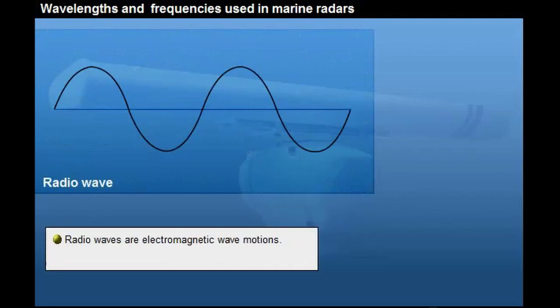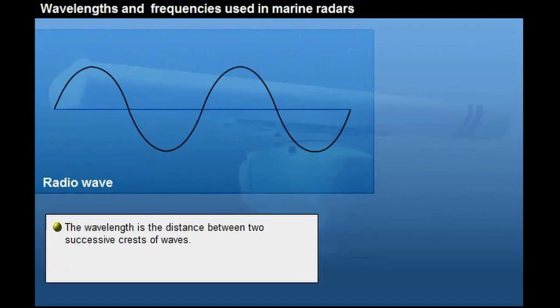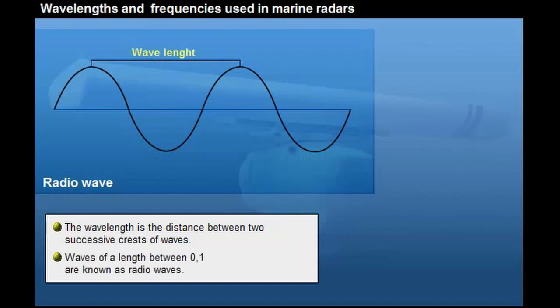Radio waves are electromagnetic wave motions of the same kind as those of light and consist, like all other wave motions, of a train of crests and troughs. The wavelength is a distance between two successive crests of waves. By international agreement, electromagnetic waves of a length between 0.1 and 30,000 mm are known as radio waves.